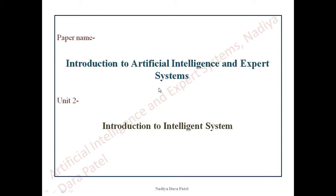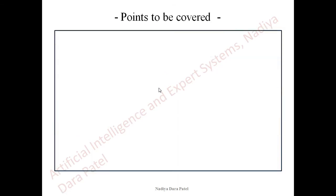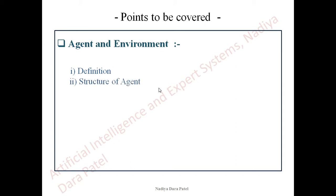We have already talked a lot about what intelligence and its components are all about. Now let us head towards our next point, which is an important point from the perspective of Artificial Intelligence — Agent and Environment. Under Agent and Environment, we will understand its definition, the structure of an agent, and some terms and terminologies used in the concept of agent and environment.